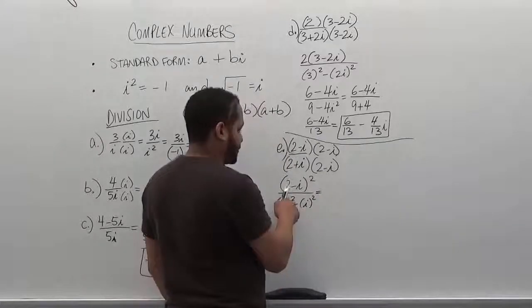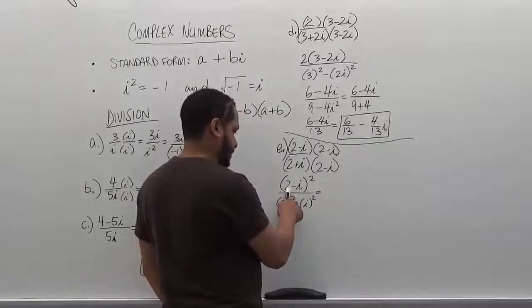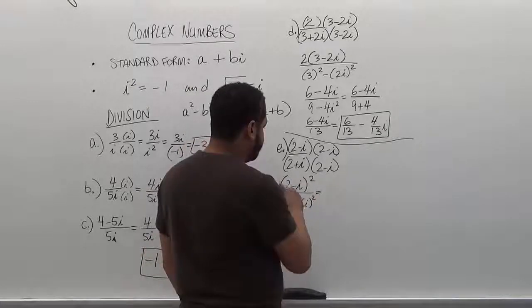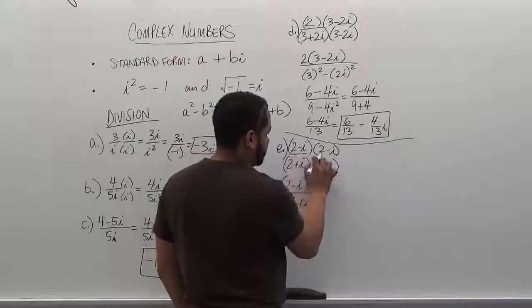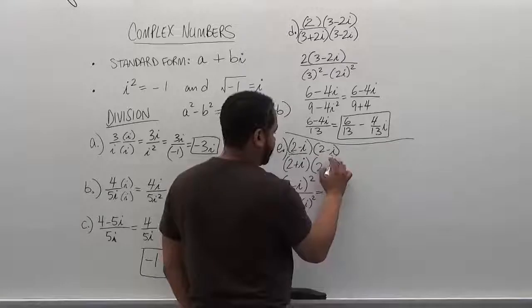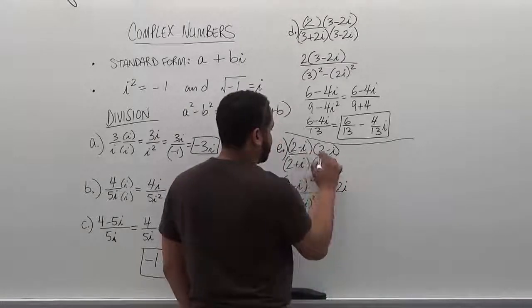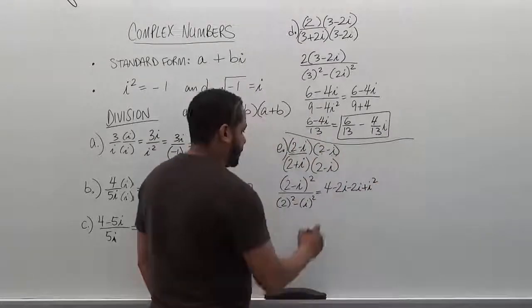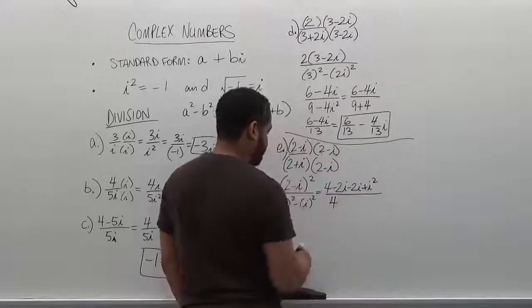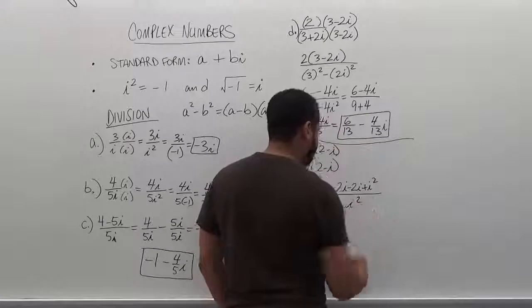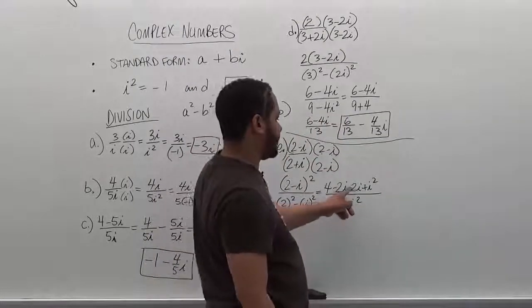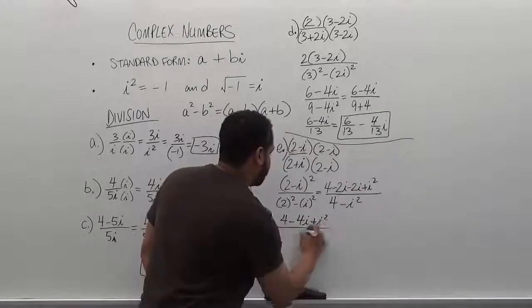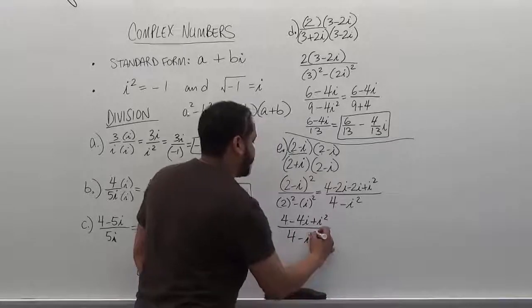We could use the perfect square formula, but we'll just FOIL and expand. 2 times 2 is 4; 2 times negative i is negative 2i; negative i times 2 is negative 2i; and negative i times negative i is positive i squared. On the bottom we have 4 minus i squared. Combining like terms on top gives us 4 minus 4i plus i squared over 4 minus i squared.